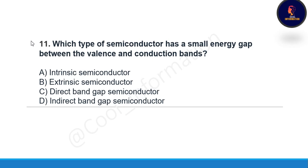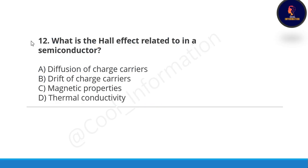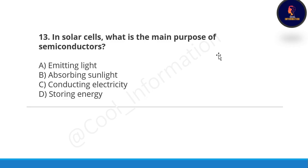Next question: which type of semiconductor has a small energy gap between the valence and conduction band — intrinsic semiconductor, extrinsic semiconductor, direct band gap semiconductor, or indirect band gap semiconductor? Correct option is C, direct band gap semiconductor. Next question: what is the Hall effect related to in a semiconductor — diffusion of charge carriers, drift of charge carriers, magnetic properties, or thermal conductivity? Correct option is B, drift of charge carriers. Next question: in solar cells, what is the main purpose of the semiconductor — emitting light, absorbing sunlight, conducting electricity, or storing energy? Correct option is C, conducting electricity.